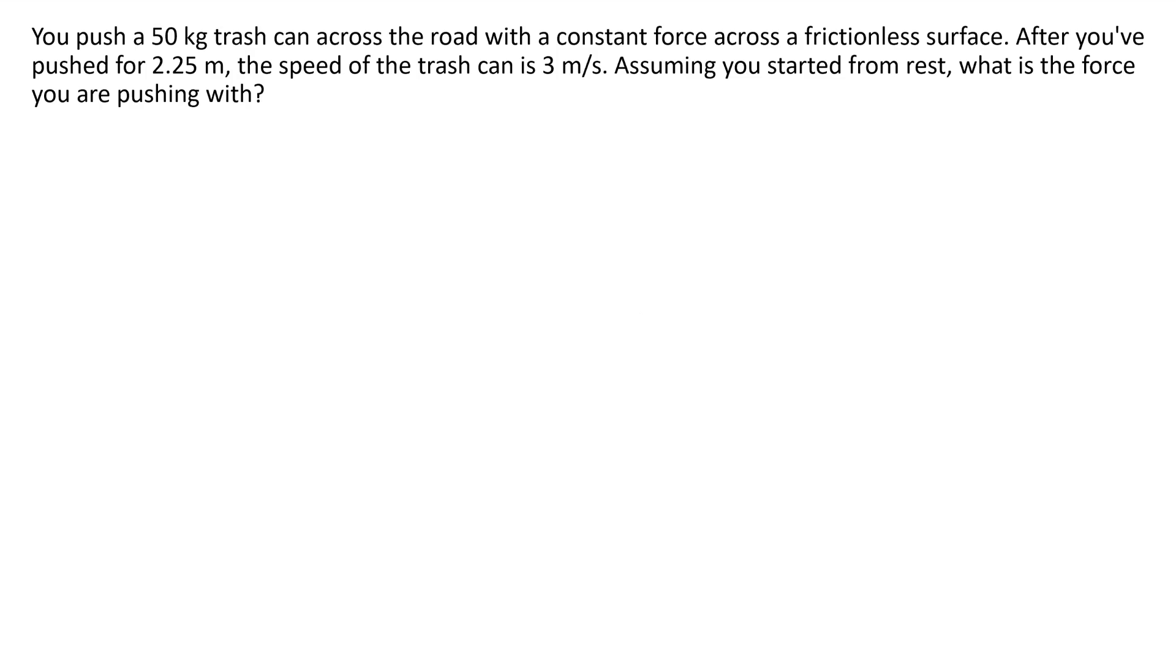You push a 50 kilogram trash can across the road with a constant force and frictional surface. After you push for 2.25 meters, the speed of the trash can is 3 meters a second. Assuming you started from rest, what is the force that you're pushing with? So in this problem, I have a box or a trash can. It's being pushed across the frictional surface with some force F. We don't know what it is. And we know that it initially has a speed of 3 meters per second. Oh, I'm sorry. Initially it has a speed of 0 meters a second because it comes from rest. And then eventually, once it has traveled a distance of, we'll call that delta X now, 2.25 meters. Now the box is traveling. Same force. We don't know what it is. But with a velocity of 3 meters a second, which we can represent here with a little vector if we want.